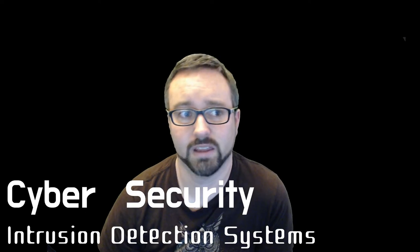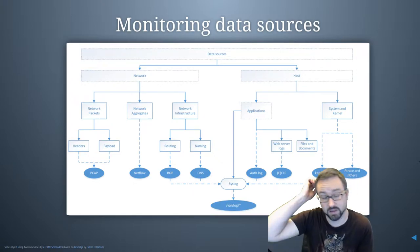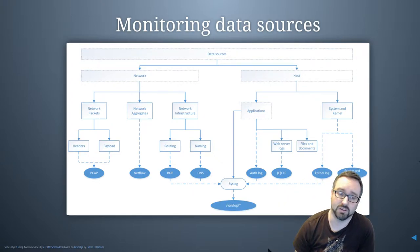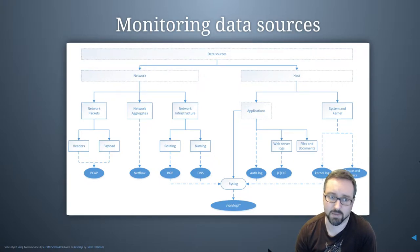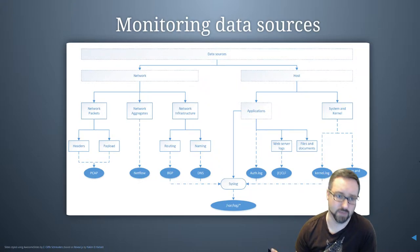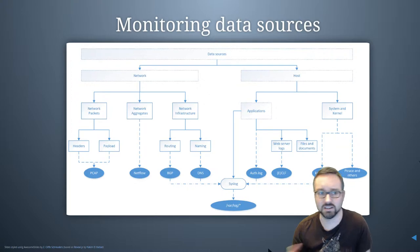If we look at some of the sources of information that are typically used when we're monitoring for signs of an attack, we've got the network-based sources of information — looking at packets, higher level aggregated information about what's happening on the network, the technical detail of what's happening on the network infrastructure side, and monitoring on hosts and servers.